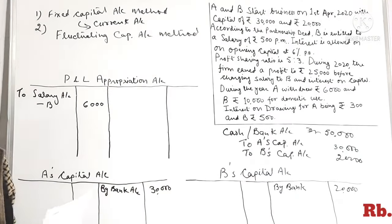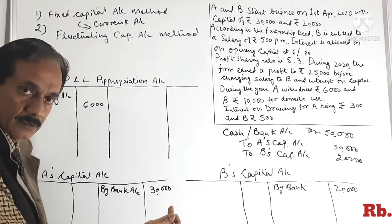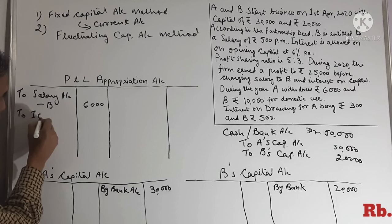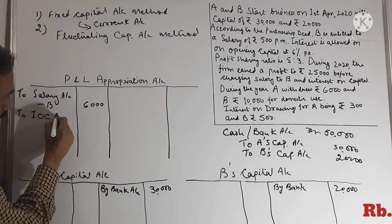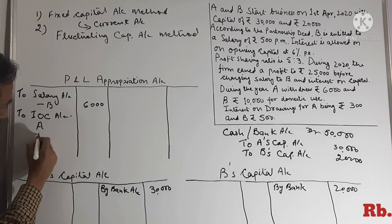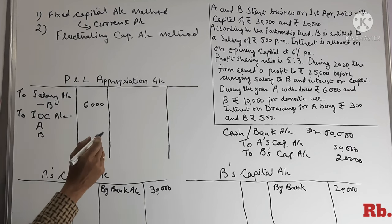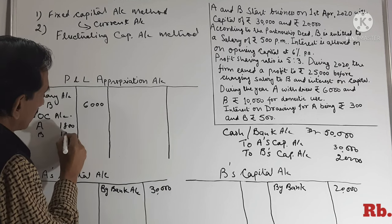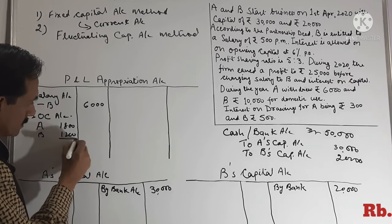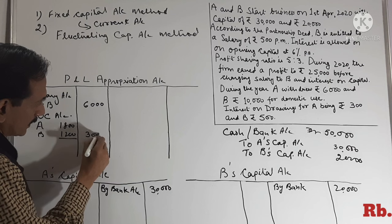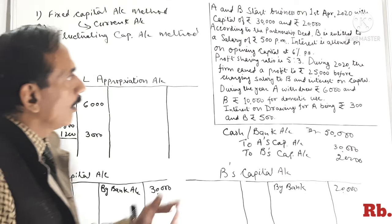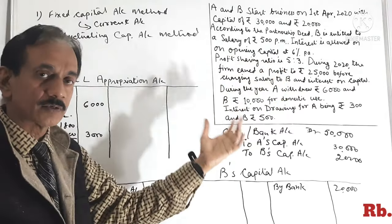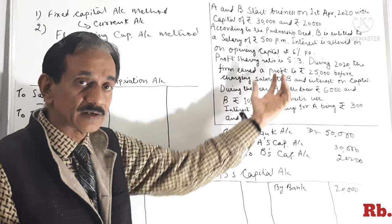In both capital accounts, we will have interest at 6%. This will also be distributed as profit. Interest on capital: A gets Rs.1,800 and B gets Rs.1,200, totaling Rs.3,000.